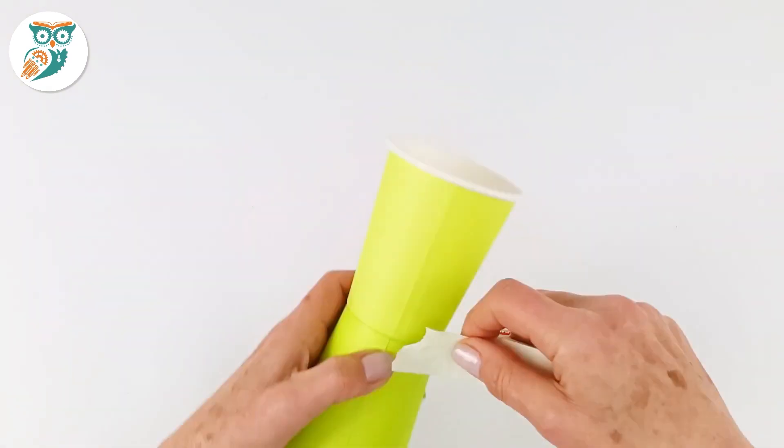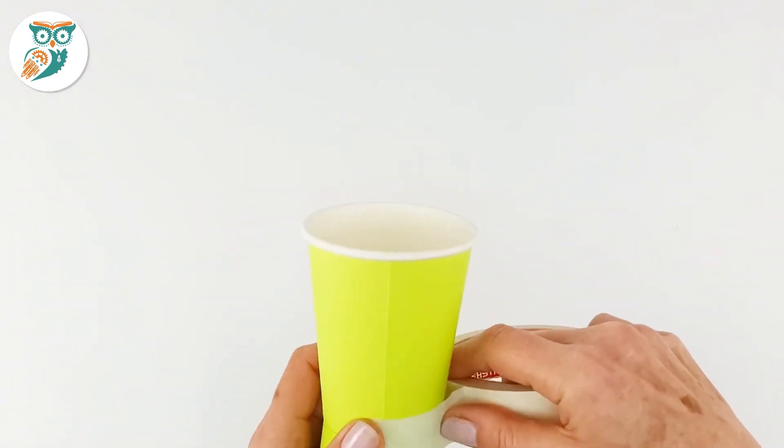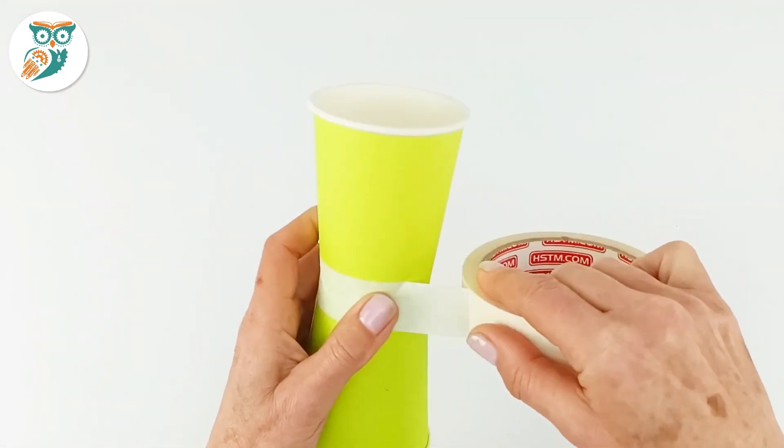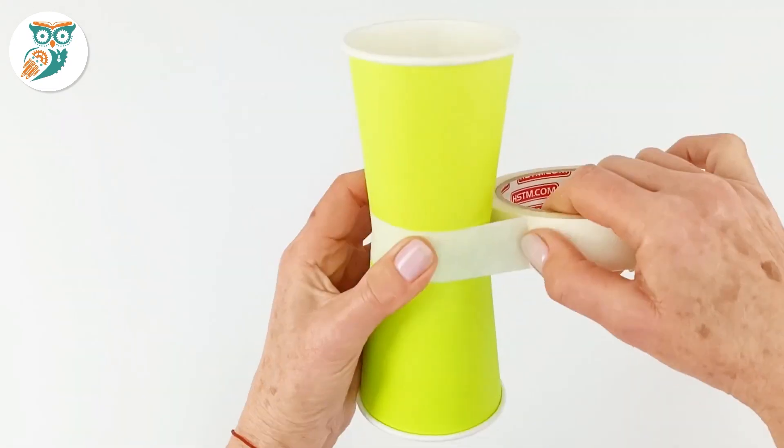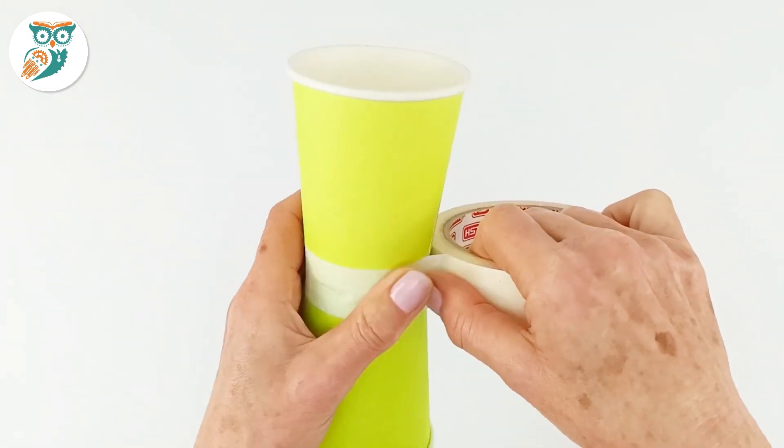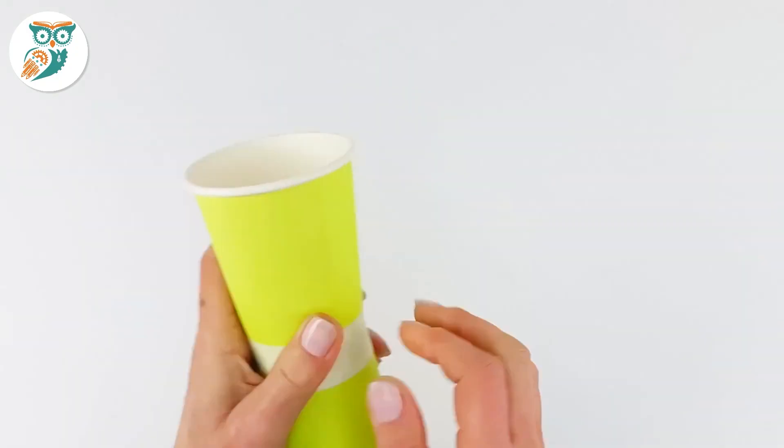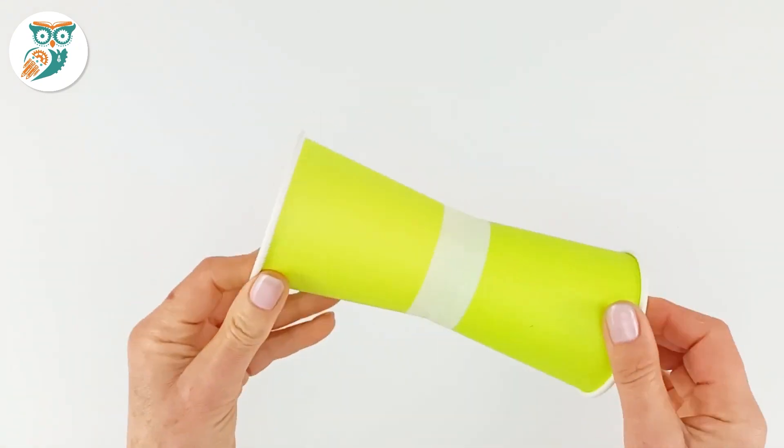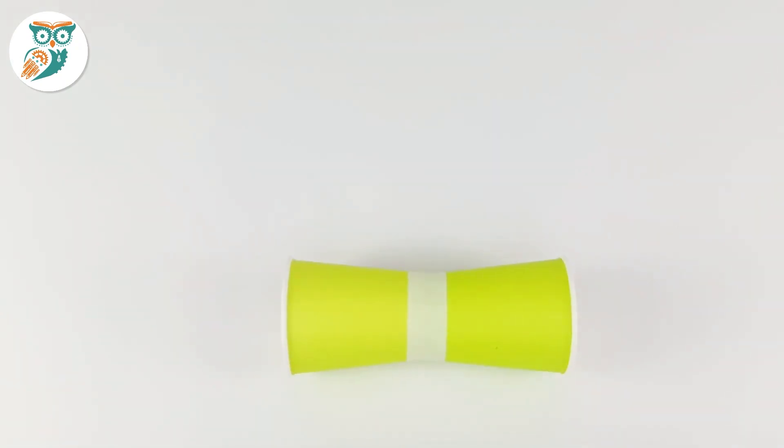Once it's dry we're going to apply some masking tape around that seam and make sure the masking tape is nice and smooth. You want to try and avoid any wrinkles because that's going to cause resistance and we want to keep this really nice and smooth. So there we go, that's our cups assembled.